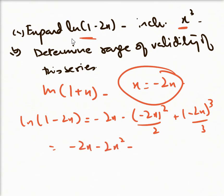This gives us -2x - 2x² - (8/3)x³. This is the expansion we have done up to the cube term.